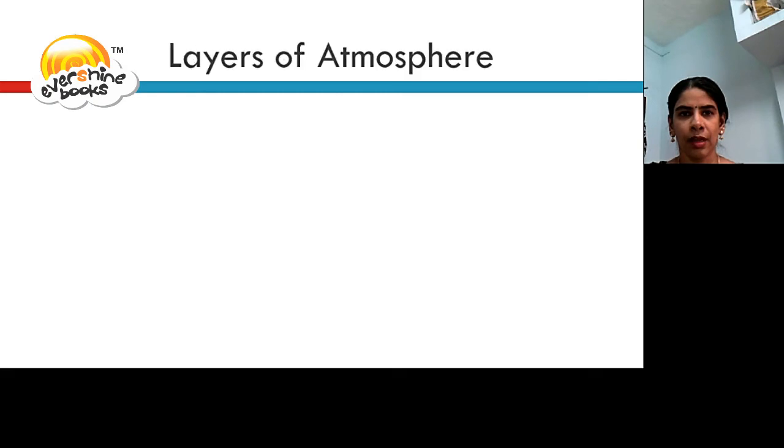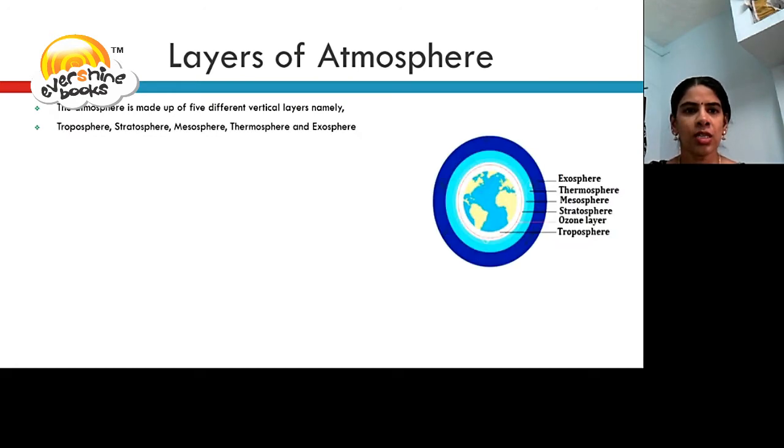Let us now learn about different layers of atmosphere. The atmosphere is made up of 5 different vertical layers namely, Troposphere, Stratosphere, Mesosphere, Thermosphere and Exosphere.